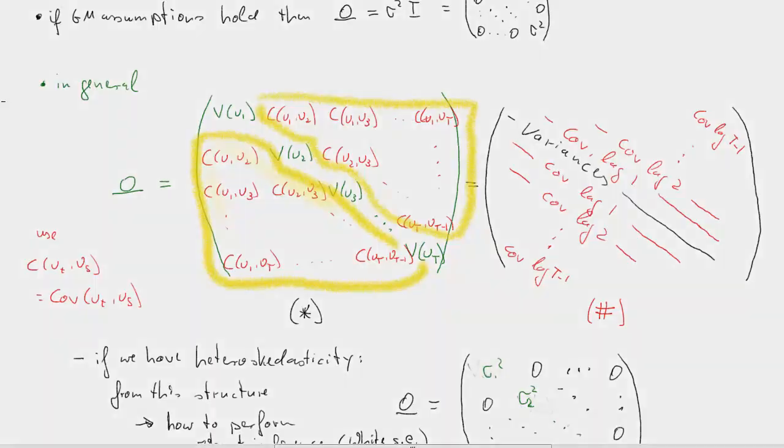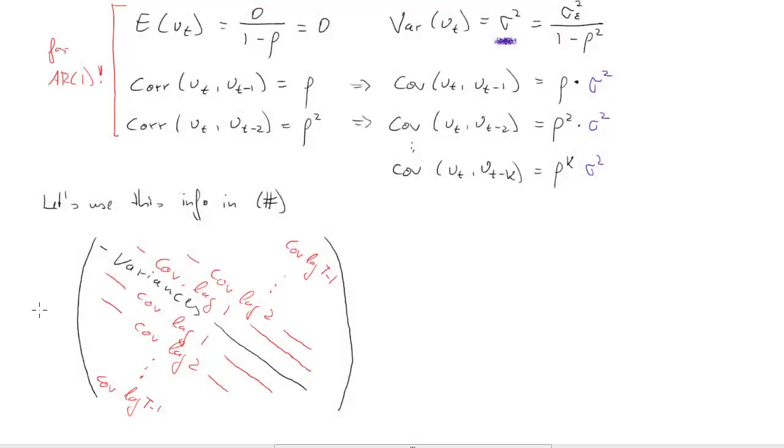We will now use this information to go back to our generic form of omega in the hash equation. We'll copy that down, and now we're going to fill this with life for our special case, because we now have established all the information we need. On the diagonal, we have the variances of the ut, which is the sigma squared. Sigma squared, we have that value everywhere on the diagonal.